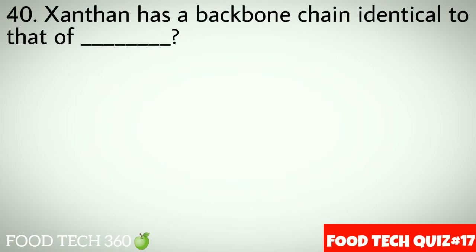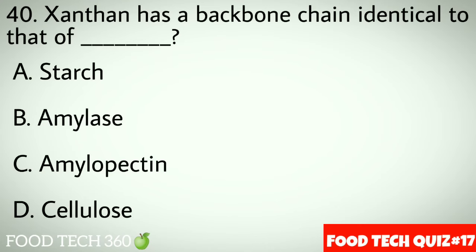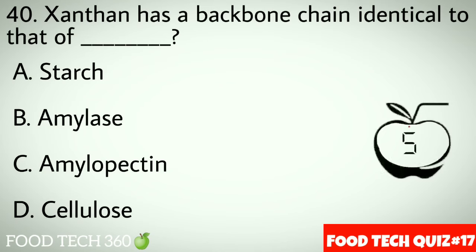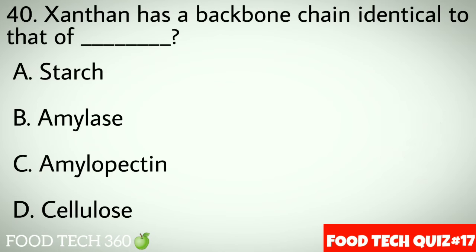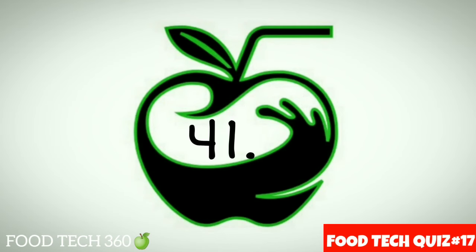Question number 40: Xanthan has a backbone chain identical to that of dash. Options: A. Starch, B. Amylase, C. Amylopectin, D. Cellulose. Correct answer: D. Cellulose.